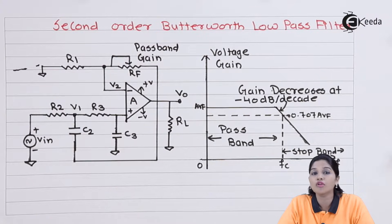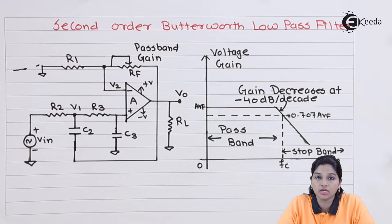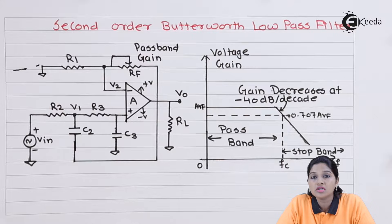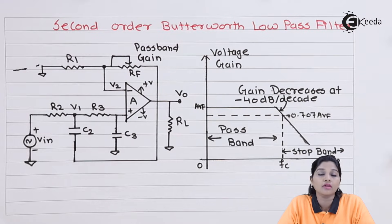If the order of the filter is equal to 1, then gain decreases at a rate of 20 dB per decade. If the order of the filter is equal to 2, then the gain decreases at a rate of minus 40 dB per decade.